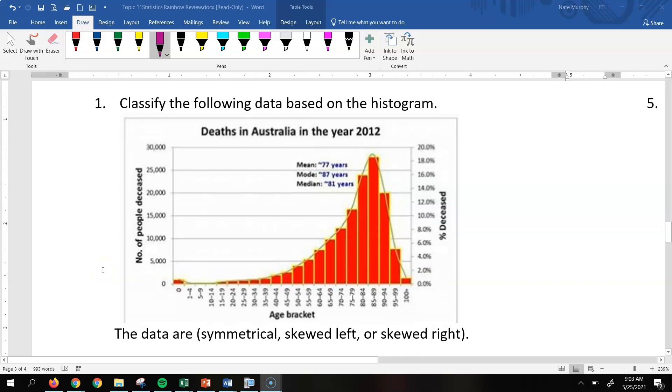All right, in this video we're going to be looking at the gold section of your rainbow review. It says classify the following data based on the histogram. So if we have that histogram, we can see that this histogram has a tail and the tail is going to the left. Since it has a tail going to the left, we would say that it is skewed left.